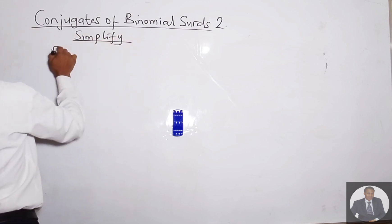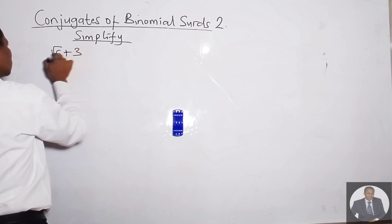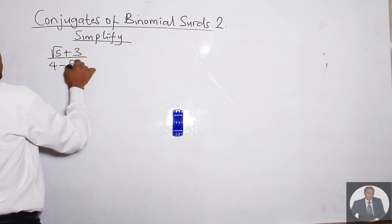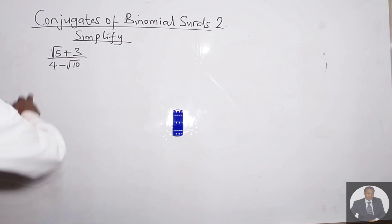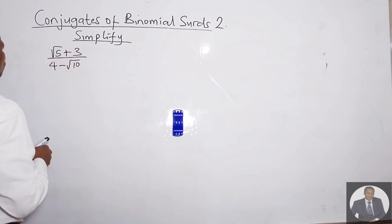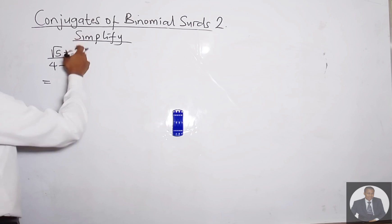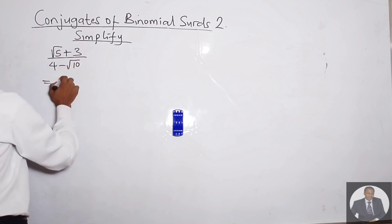Simplify (√5 + 3) over (4 − √10). We rationalize or simplify with the conjugate of (4 − √10), which is (4 + √10).